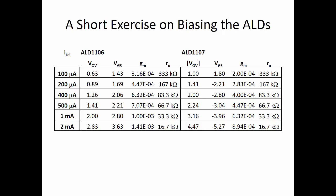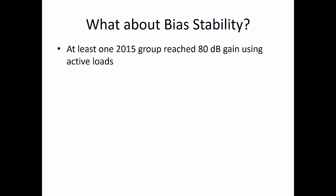Here's a short exercise on biasing the ALDs for specific bias currents ranging from 100 microamps to 2 milliamps. Keep in mind that the supply voltages for your op-amp are plus and minus 5 volts. Looking at this table, currents beyond 400 microamps severely limit the voltage swing of the amplifier.